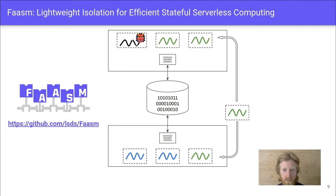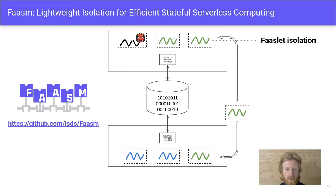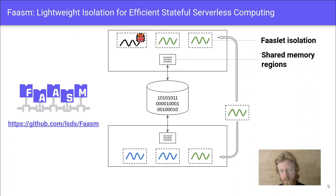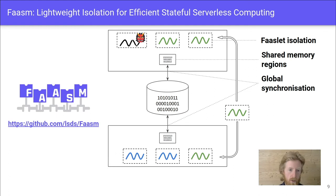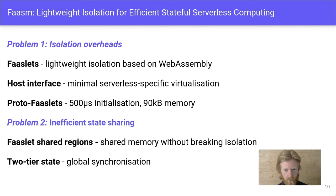We now present FASM, our solution to these problems. FASM provides lightweight isolation in the form of FASlets — a new thread-based mechanism built on WebAssembly that gives us the multi-tenant isolation we need with low overheads. FASlets also support shared memory regions, which can be used to efficiently share state between co-located functions. FASM uses a two-tier state architecture to synchronize local replicas across hosts, and we can further reduce isolation overheads with FASM's snapshot and restore mechanism called proto-FASlets.